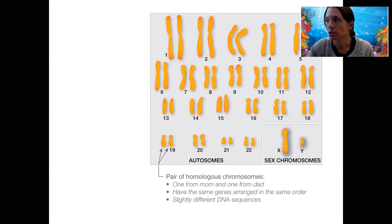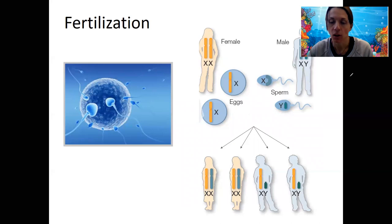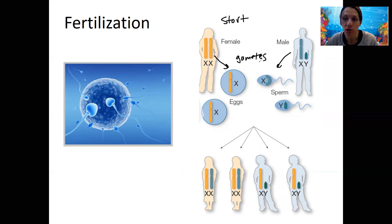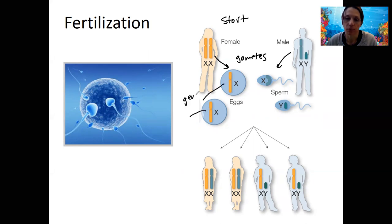There's also a process called meiosis, which is when we make gametes. Here's a figure demonstrating that: there's a male and a female, each one making gametes. The process of producing these is called meiosis, and it involves more genetic diversity than mitosis does. There are some processes during meiosis that result in genetic diversity in these gametes, even within one individual.